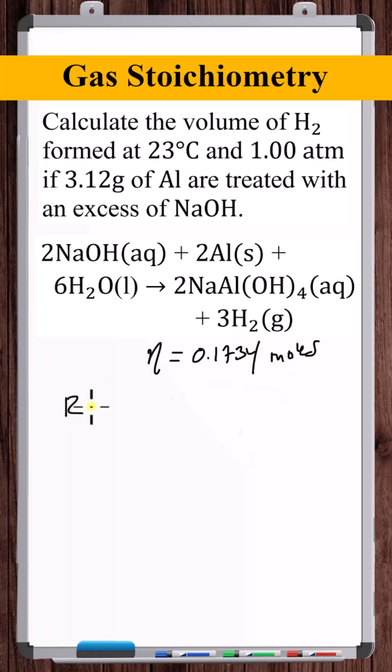For the universal gas constant R, we'll use the 0.082057, which has units liters atmosphere per mole Kelvin. So the pressure then we'll just leave as one atmosphere. The temperature we need to convert to Kelvin, 23 plus 273 is 296.